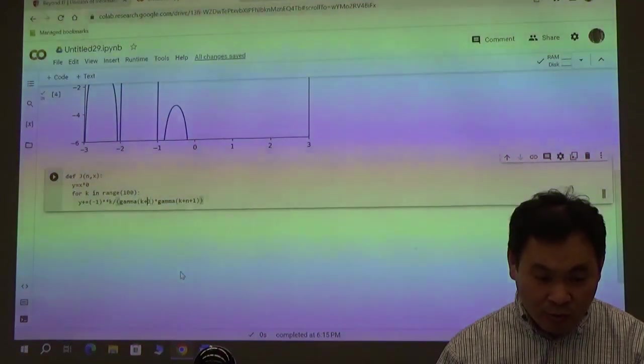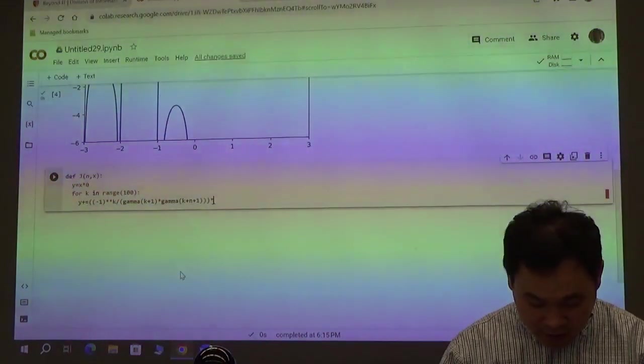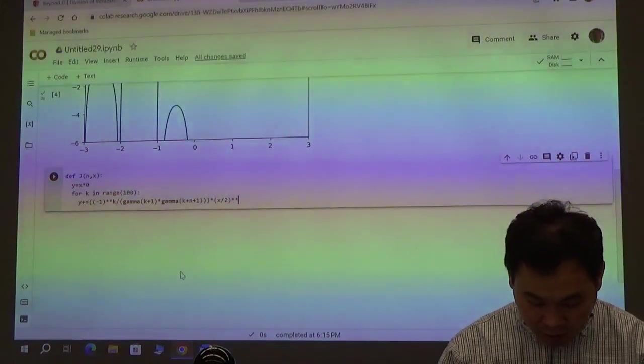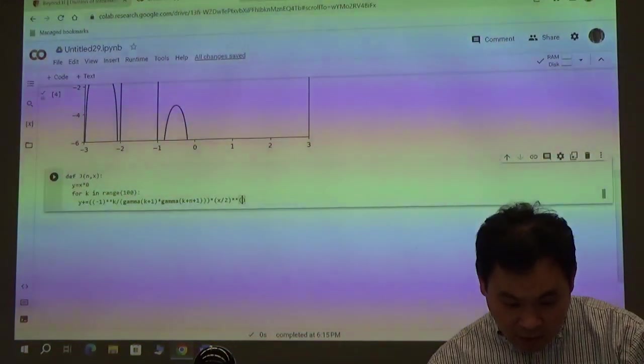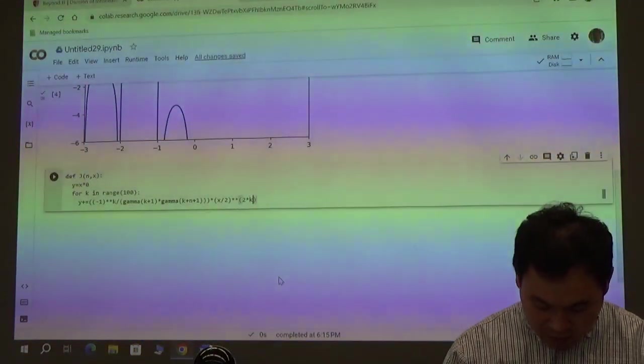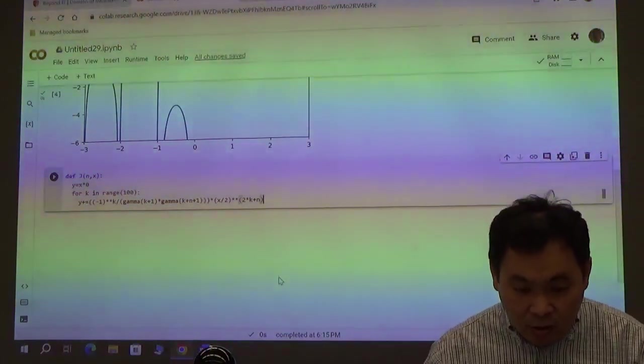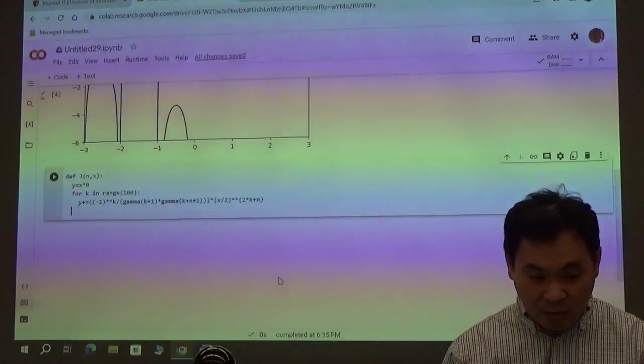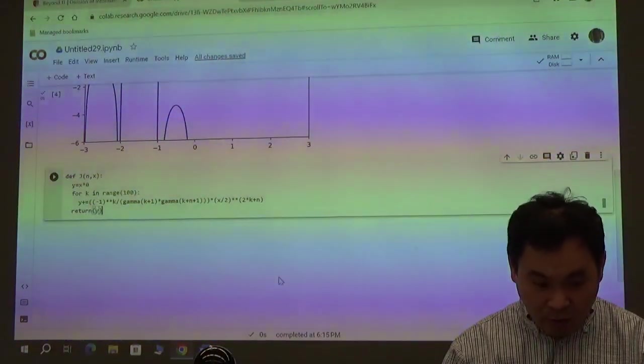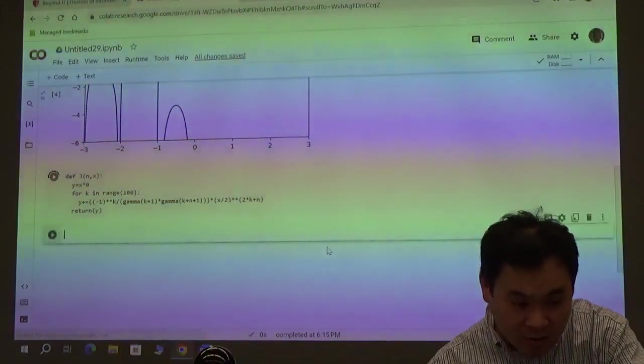I'm going to add to y all these terms, which were first negative 1 to the kth power. So that was on the top, right? And then we have to divide that by gamma of (k+1) times gamma of (k+n+1). So that was the coefficient. And to this coefficient, we have to multiply by (x/2) to the power of 2k+n. So we get, we have all these values. We add them to y, and then we're going to return the value of y as the output for the Bessel function. So we have the Bessel function ready.